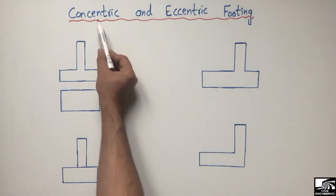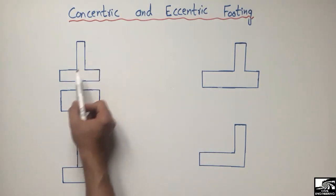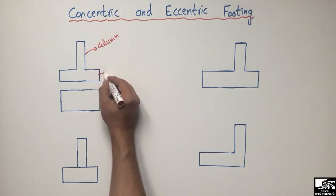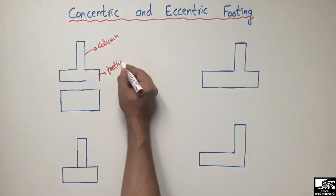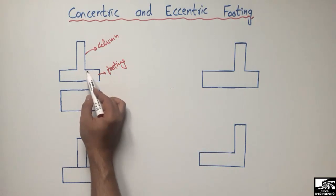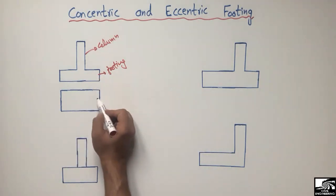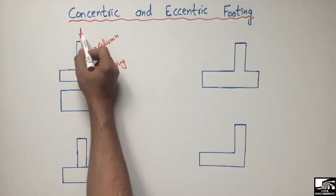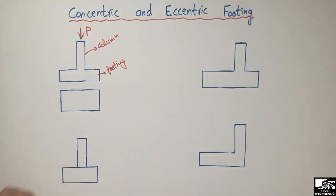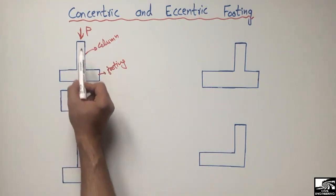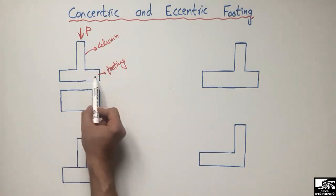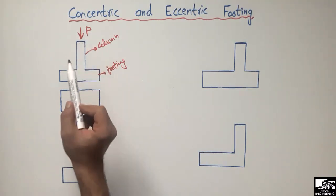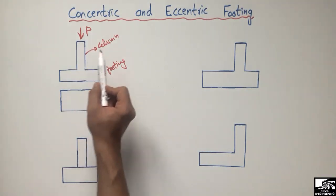First we explain the concentric footing. In this type of footing, if we consider this is a column and this is the footing provided for this column — which looks like an isolated footing — and this is the plan view of this footing. When the load P acts on this column, it will transfer this load into the footing. When the centroid of the load coincides with the centroid of the footing, we call it the concentric footing.